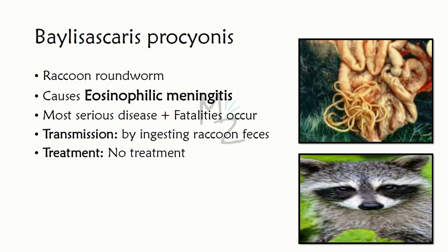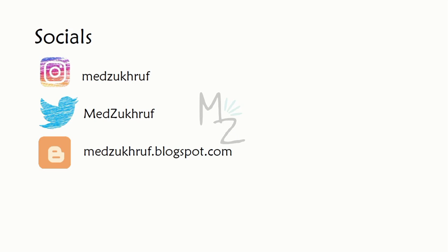The other organism causing eosinophilic meningitis is Baylisascaris procyonis, a raccoon roundworm acquired accidentally by ingesting raccoon feces. These organisms cause more severe disease than Angiostrongylus and fatalities occur. For Gnathostoma, albendazole can be effective; for Baylisascaris procyonis, there is no treatment.